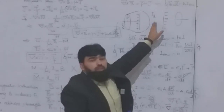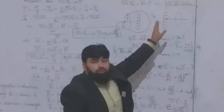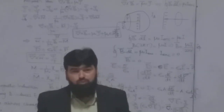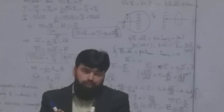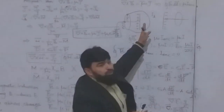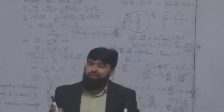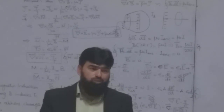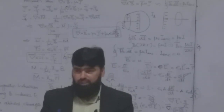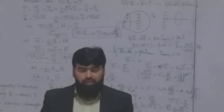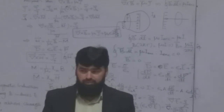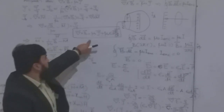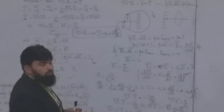Earlier Maxwell was calling this one the displacement current — not due to the mechanism we discussed here — at that time the concept of ether was there. He was putting forward that it is the responsibility of ether to displace this current from here to there. So his approach and his calculation were right, but his understanding and naming of this concept wasn't very much right. But the calculation was correct, and now you can write this thing in a particular form.